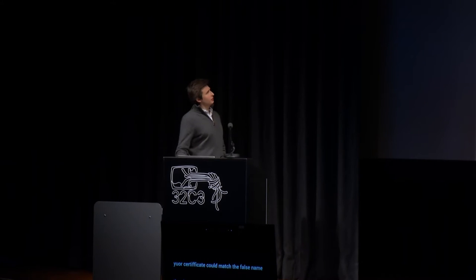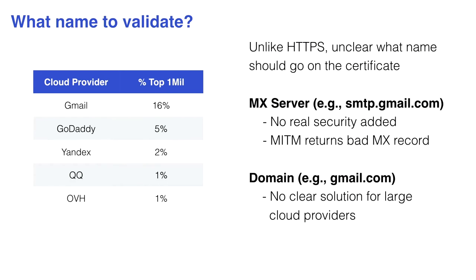So the alternative that makes more sense is to put the actual domain — gmail.com — on the certificate on the mail server, so we know we're connecting to the real server. But a huge number of people delegate their email out. Among the top million domains on the Alexa list, approximately 25% delegate their email to someone else. So suddenly Gmail would need a certificate matching 16% of domains on the internet potentially. While it's not entirely infeasible to create technology to handle this, it's not immediately obvious how to do it today — there isn't an immediate solution where we can start to require STARTTLS.